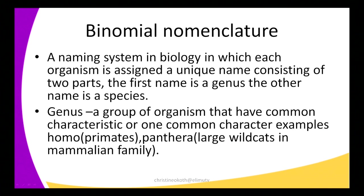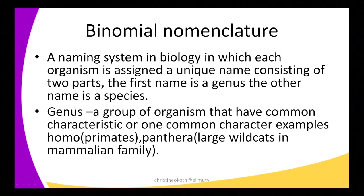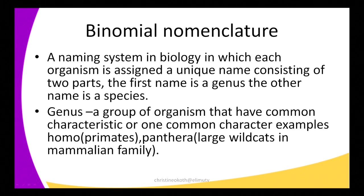We can also define binomial nomenclature as a naming system in biology in which an organism is assigned a unique name consisting of two parts. The first name has to be a genus and the other name has to be a species. So basically, binomial nomenclature is a type of naming system whereby an organism is given two names — the first name being a genus and the second name being a species.